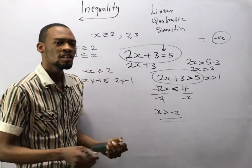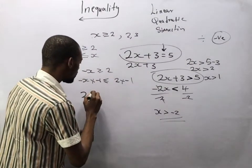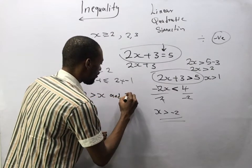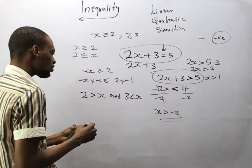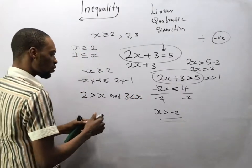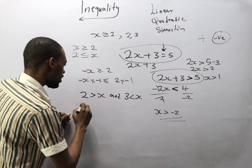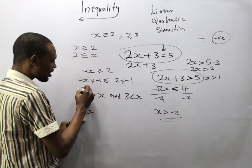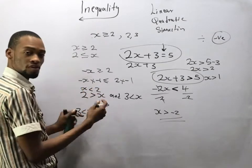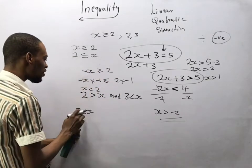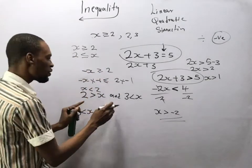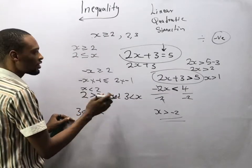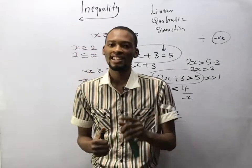You can also combine inequalities. If I say 2 is greater than s and 3 is lesser than s, we can combine them. Since 2 is greater than s means s is lesser than 2 when reversed, we combine to get: 3 is lesser than s and s is lesser than 2. So let's see some questions under inequality.